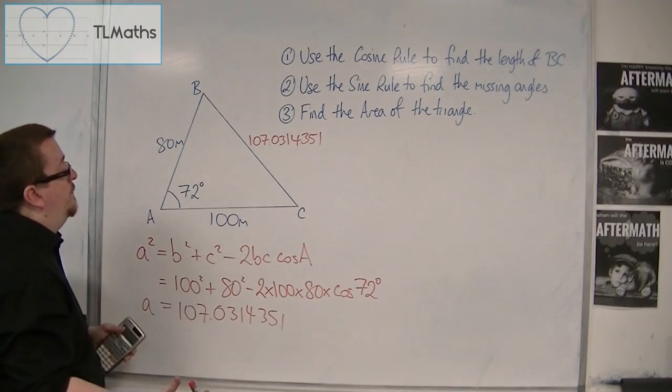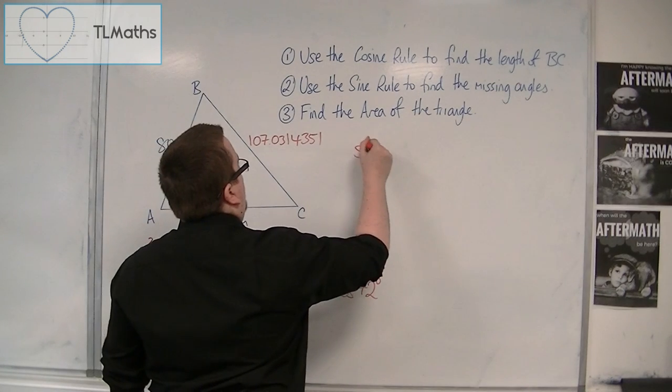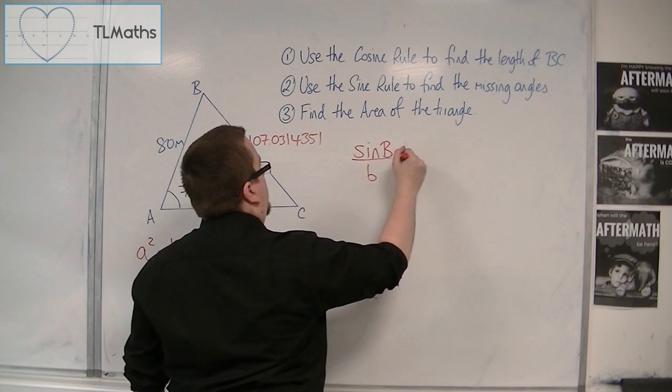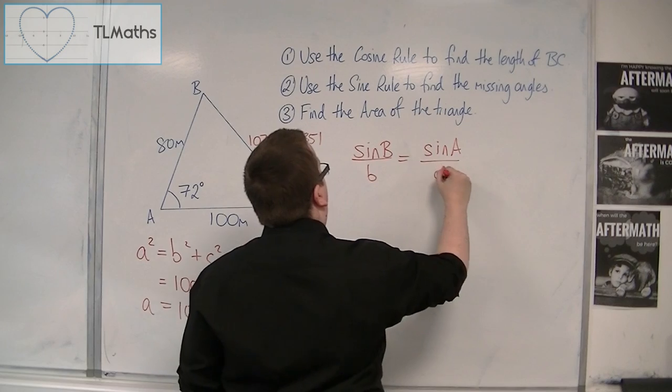OK? And because I need an angle, so let's say I want to find angle b, I would put the sines in the numerator instead. So, sine b over b is equal to sine a over a. This is the sine rule.